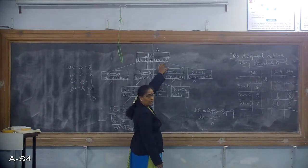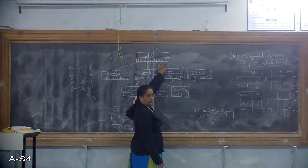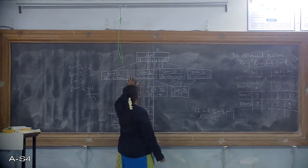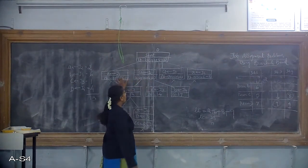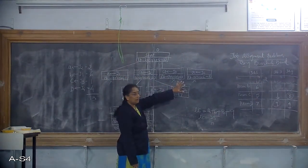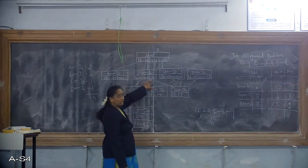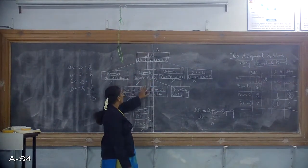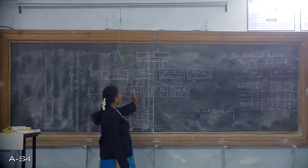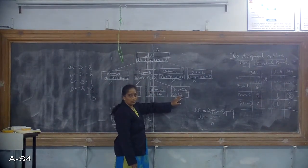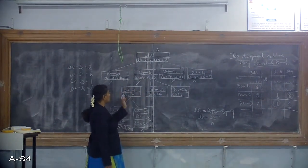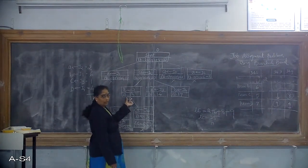The zeroth level node indicates that no job is assigned to any person. For person A, there were 4 choices, and the second gave the least cost value of 10. For person B, only 3 options were available. Out of those 3 options, the first option gave the least lower bound value, which was picked for the next level of exploration.